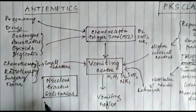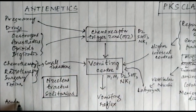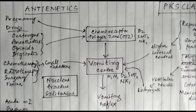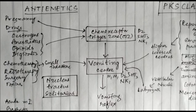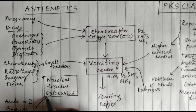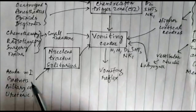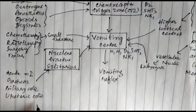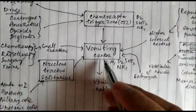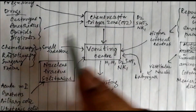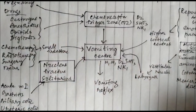Several diseases such as acute myocardial infarction, gastritis, biliary colic, and ureteric colic activate the nucleus tractus solitarius, which ultimately activates the vomiting center. All these are stimuli which activate the vomiting center, causing the vomiting reflex.